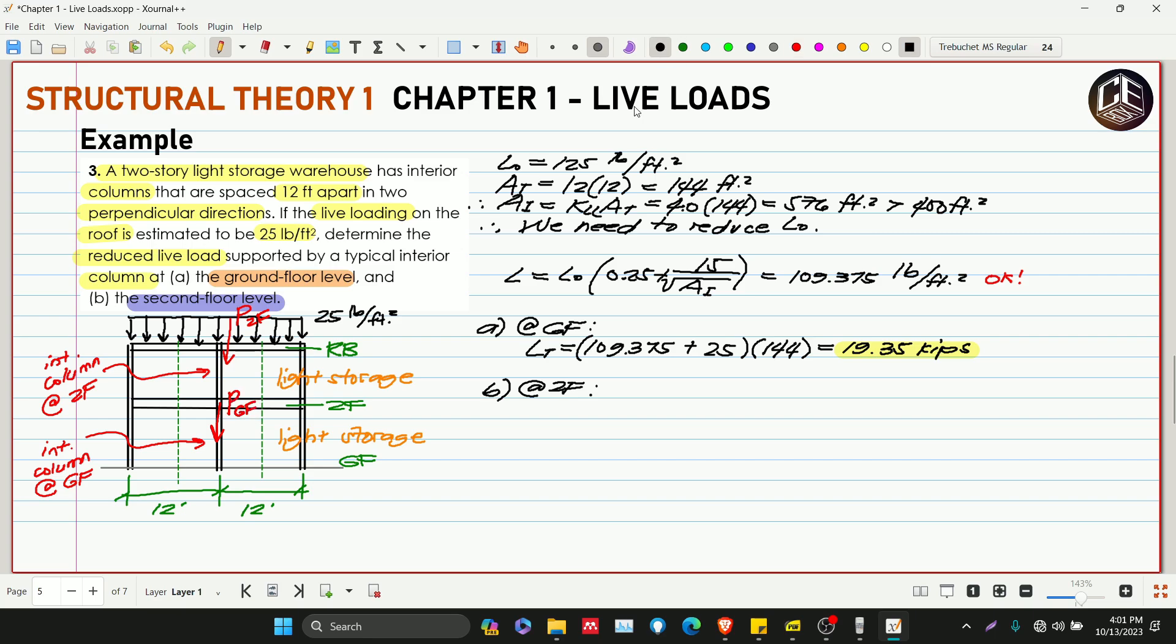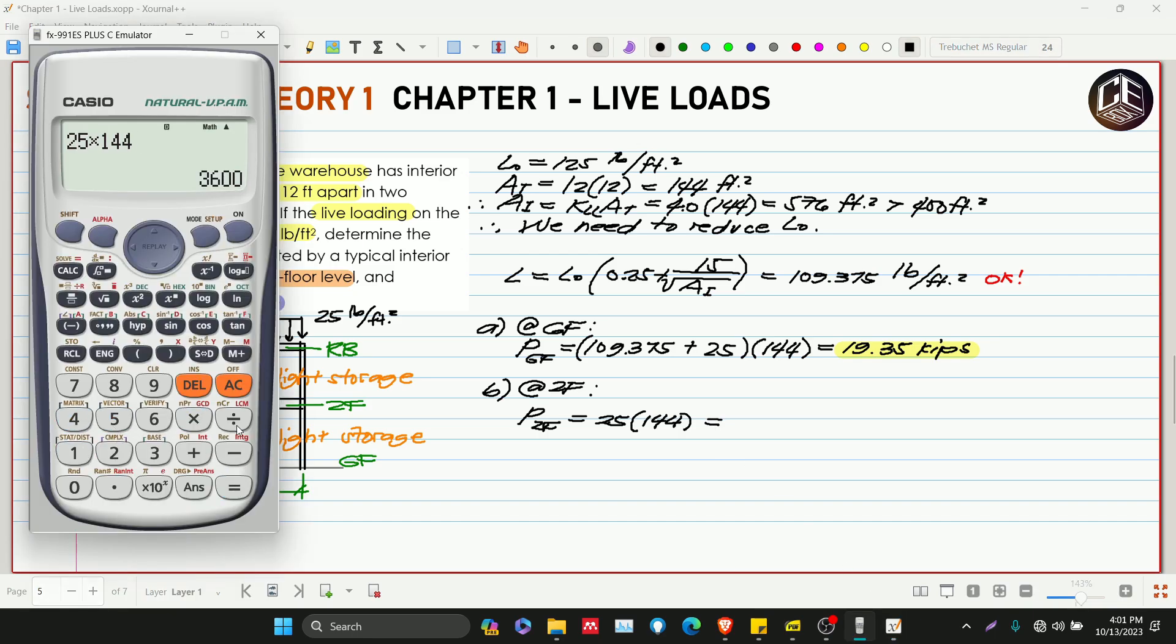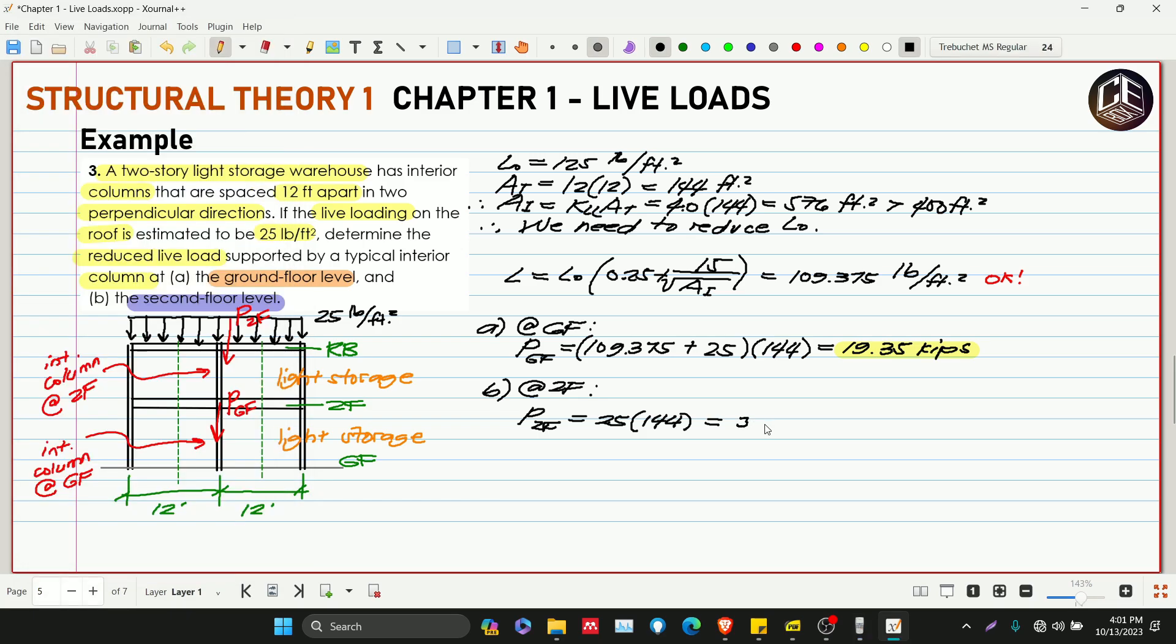Hindi na pala ito LT kasi ano na siya, point load na siya. So this is PGF, dito naman P2F. It's equivalent sa 25 pounds per feet squared multiplied by 144, so 3,600, divided by 1,000, this is 3.60 kips.